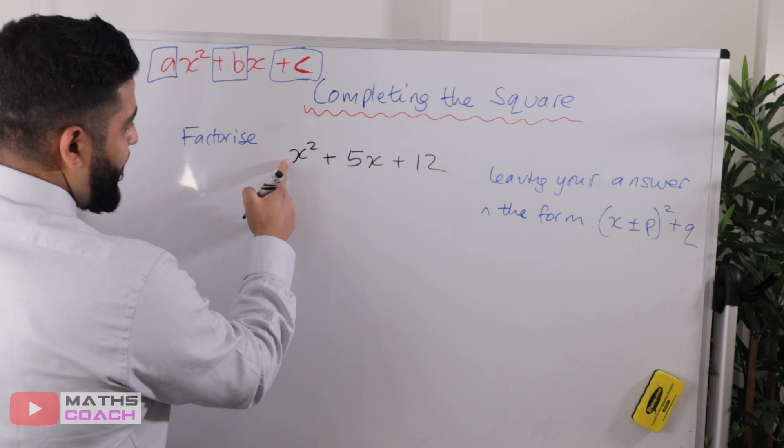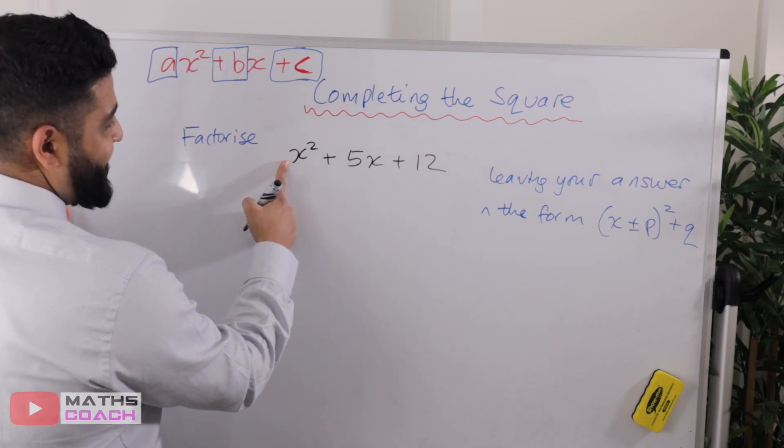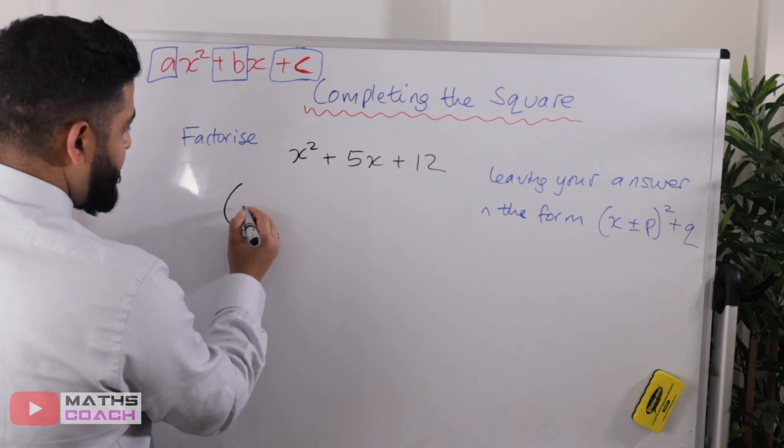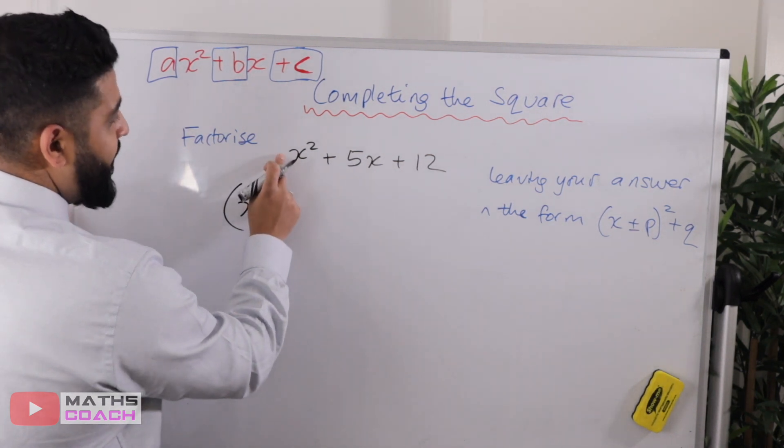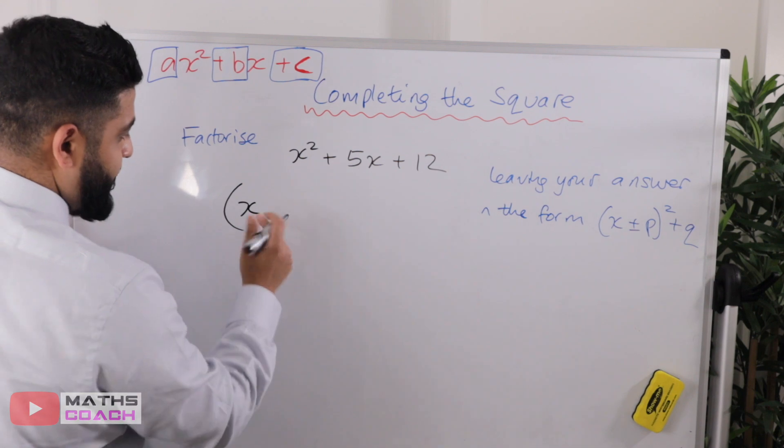Let's see what happened. So step number one, the coefficient of x² is one, we're good to go. So I will show where we have coefficient more than one and we have to deal with that later on.